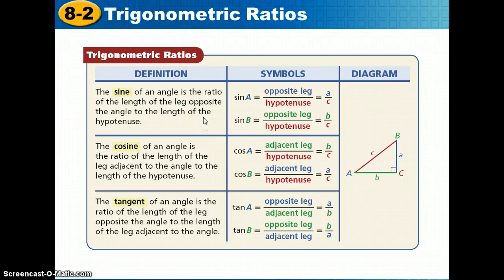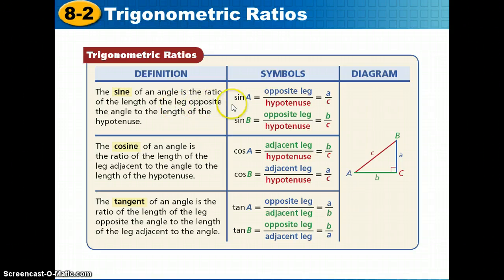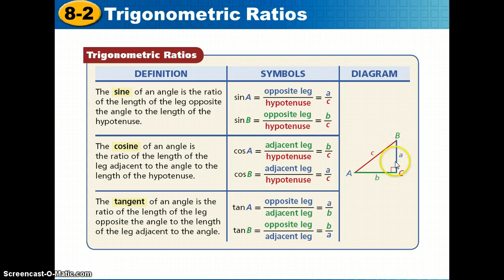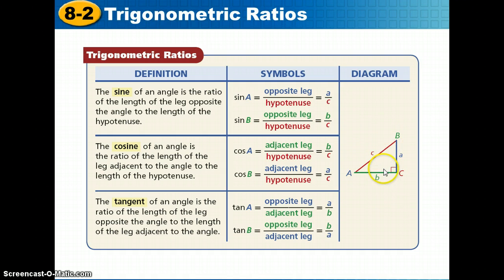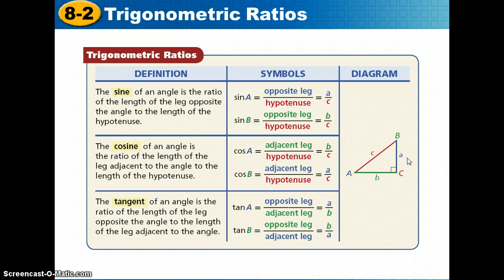A trigonometric ratio is a ratio of two sides of a right triangle. The sine of an angle — spelled S-I-N-E — is the ratio of the length of the leg opposite the angle to the length of the hypotenuse. For angle A, that's opposite leg 'a' over hypotenuse 'c'. The sine of B is leg 'b' over hypotenuse 'c'. Sine is opposite over hypotenuse.